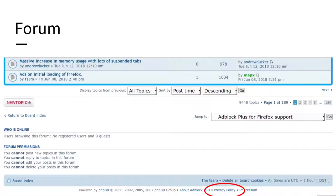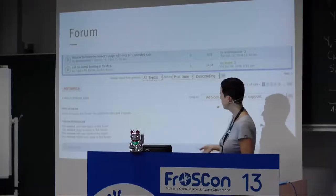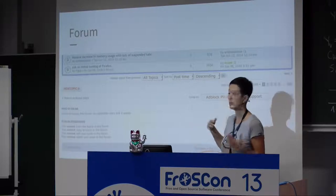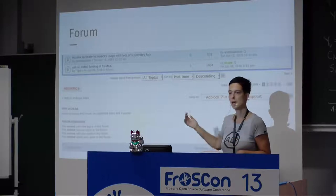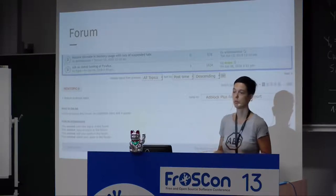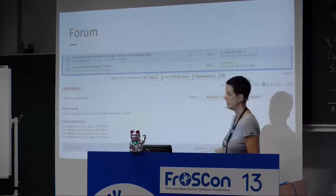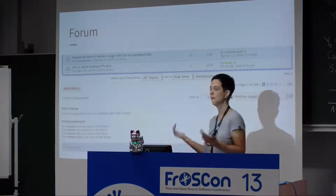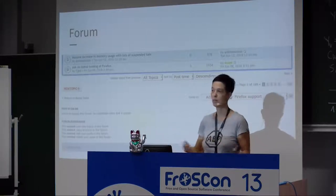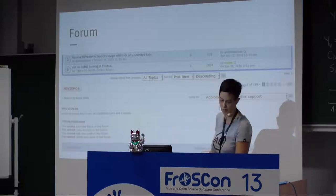Beyond the product itself, there are many other touch points with your community you need to care about. Most open source communities have a forum. The AdBlock Plus forum, for example, collects personal data when people register to participate in discussions. This means there needs to be a privacy policy explaining what is done with the data, whether it is handed to third parties, whether there is tracking, and when the data is deleted.